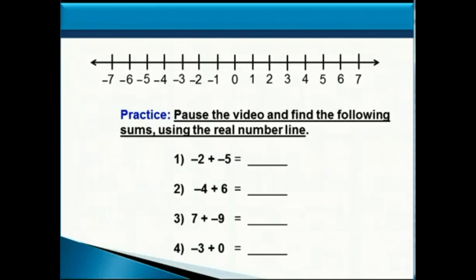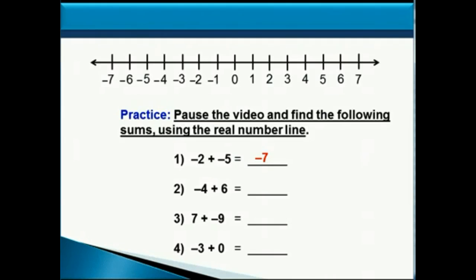So now pause the video for a moment and see if you can find the following sums using the real number line. Let's see how you did. Negative 2 plus negative 5 is negative 7. Negative 4 plus positive 6 is positive 2. 7 plus negative 9 is negative 2. And lastly, negative 3 plus 0 is negative 3.